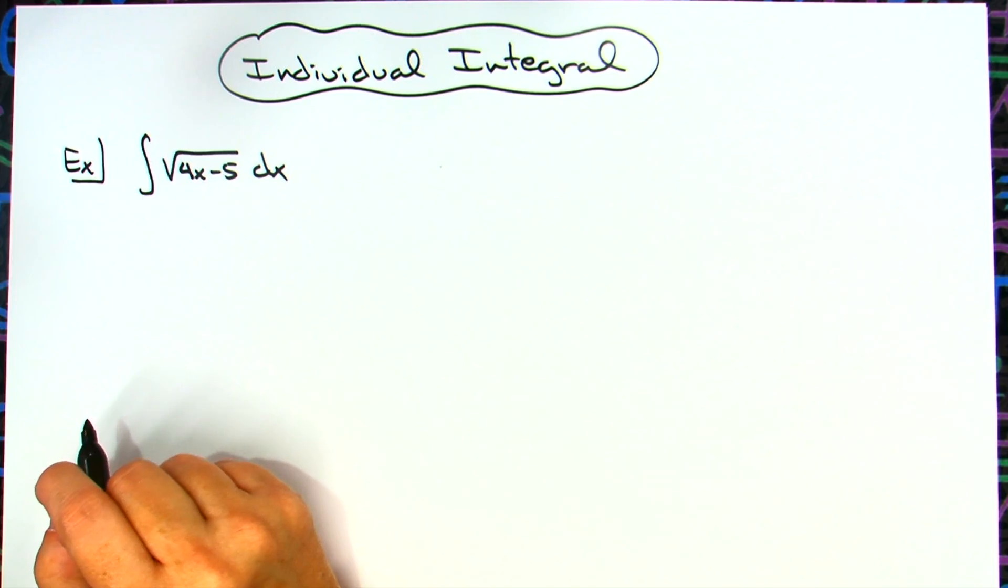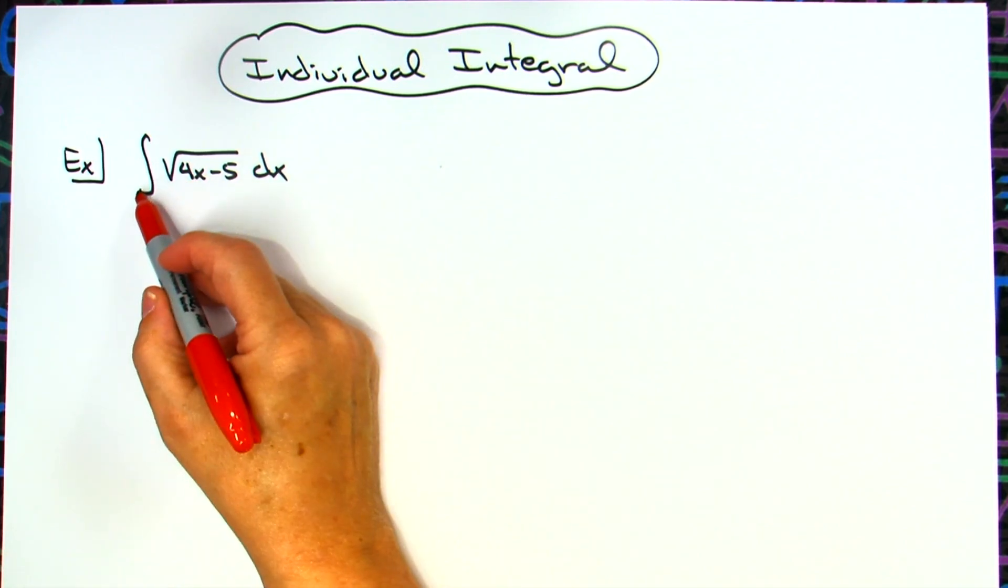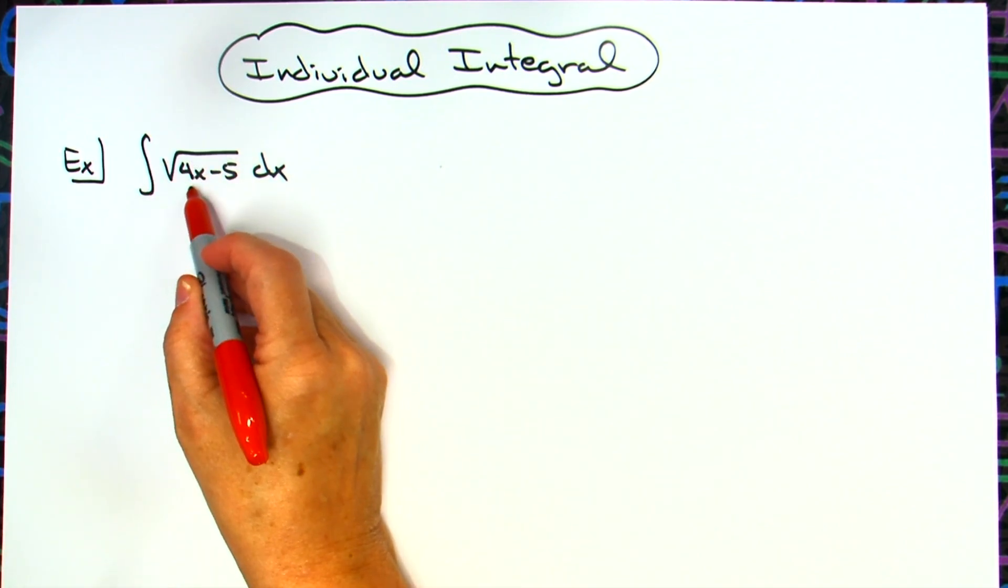It's going to be a basic u-substitution integral. We've got the integral of the square root of 4x minus 5.